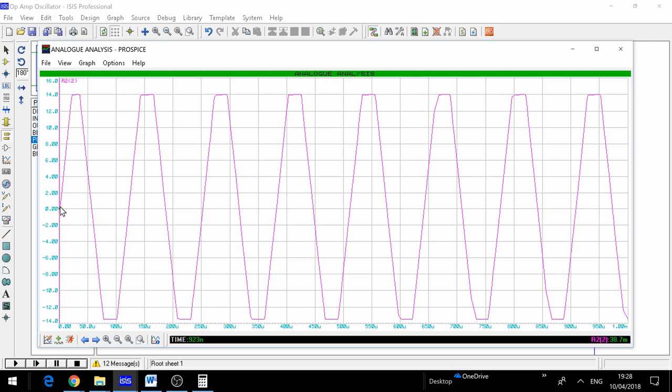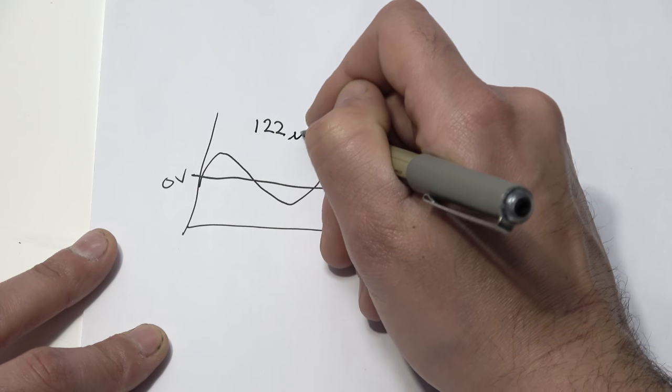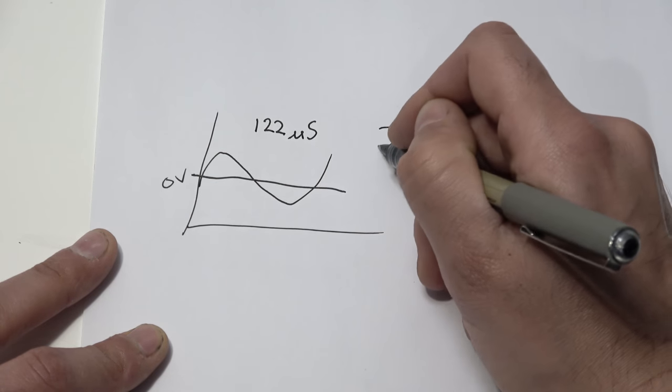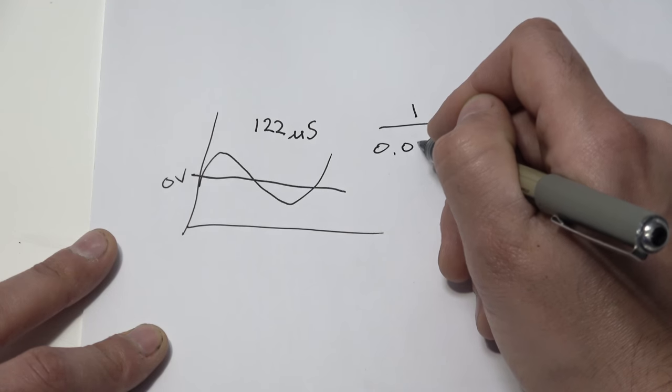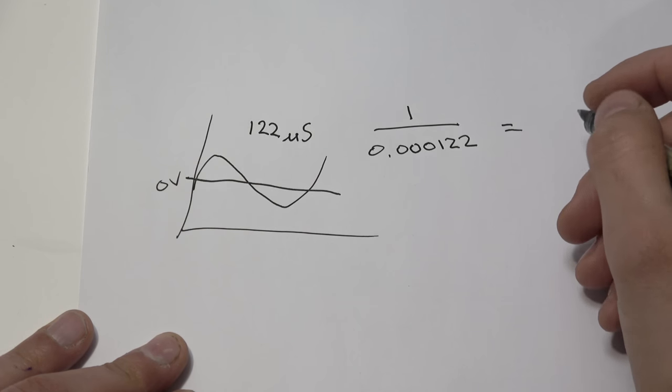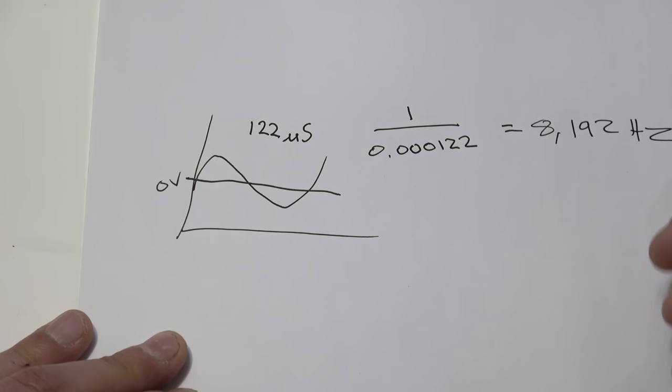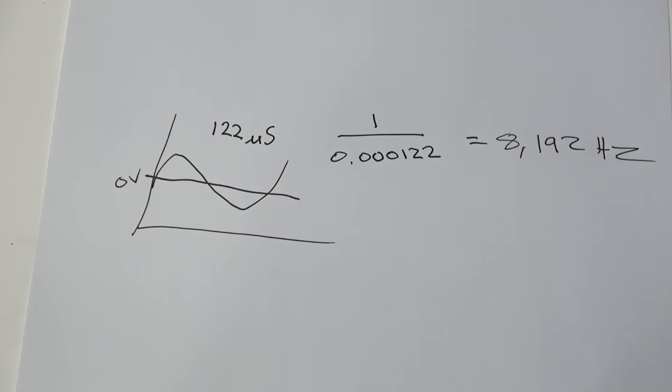So we've had a look at that graph and we can see that a complete cycle from where it crosses 0 up and back down again, this time is around about 122 microseconds. And if we take one second and divide it by 122 micro, we'll end up with something around about 8192 hertz. So we're close to 10K, not spot on, but we would generally make this circuit adjustable.